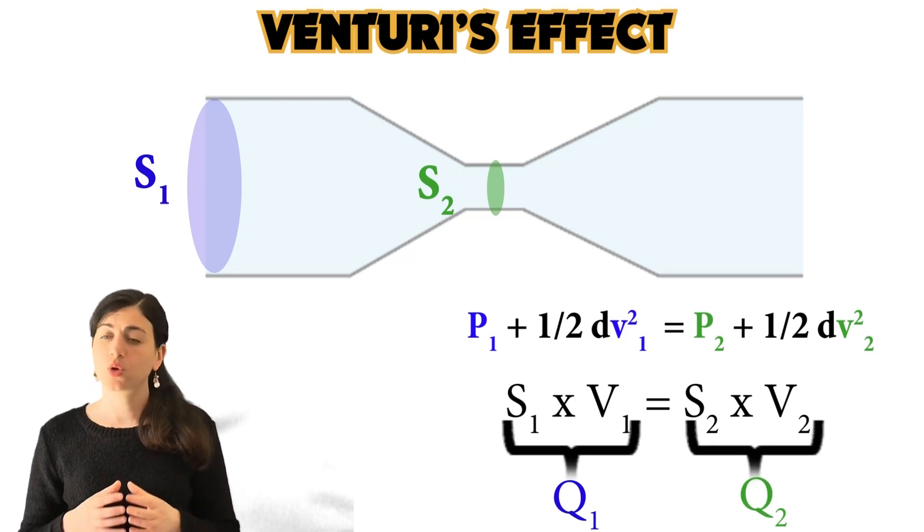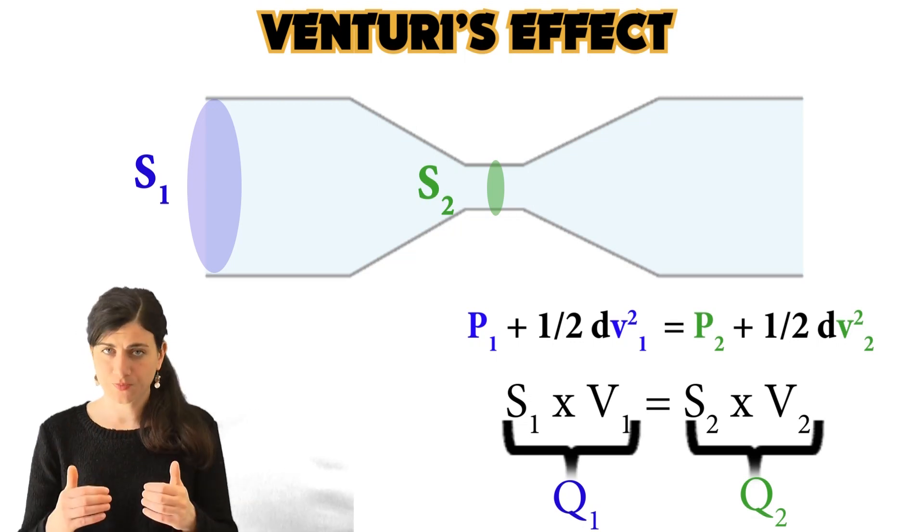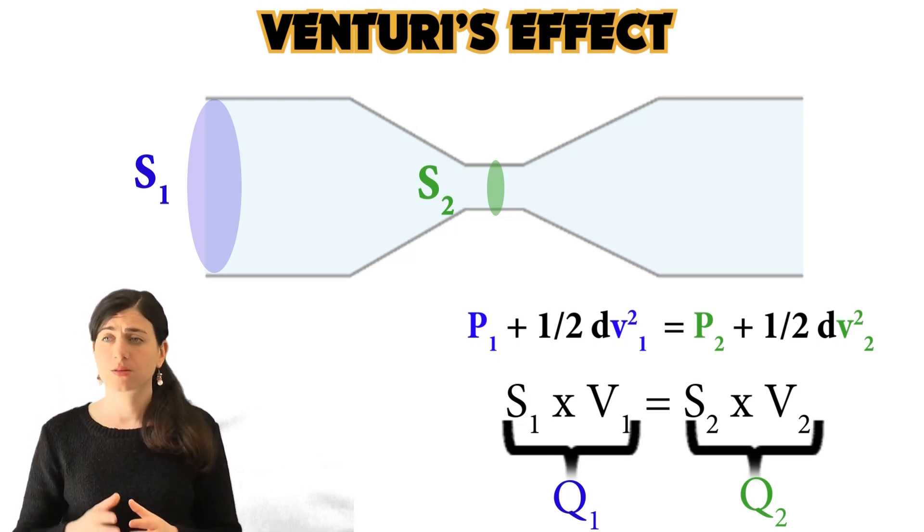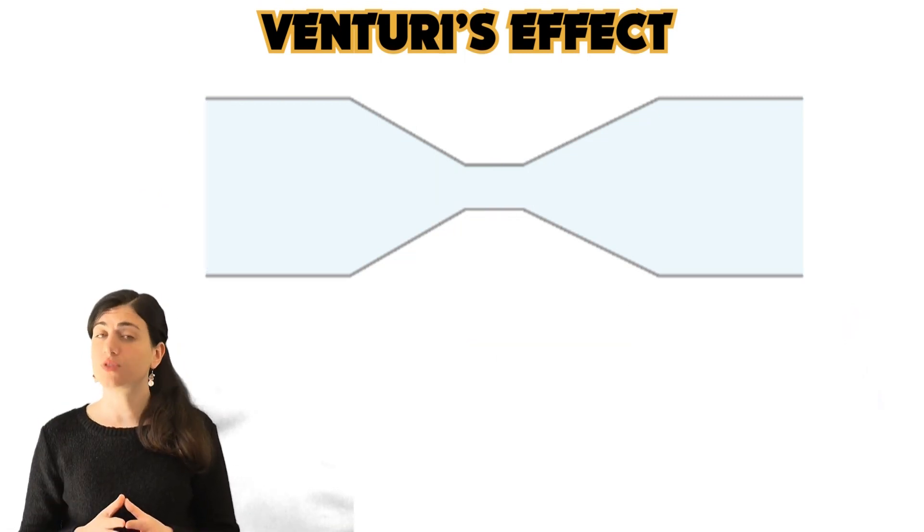The only way Q1 equals Q2 is that the speed V2 in the narrowing becomes bigger. And that's what is actually happening in the narrowing of this kind of tube.